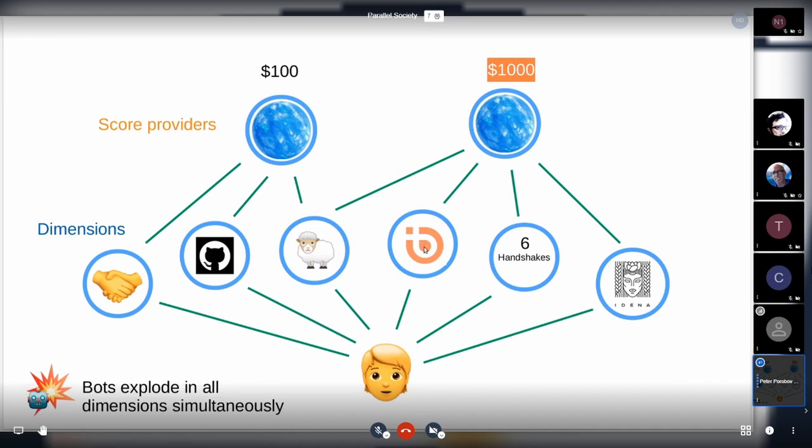If we have a set of dimensions that are highly trusted - like a user that belongs to some DAO, at the same time has some score in BrightID, in six handshakes (which is our another idea), and has a score in IDENA - a score provider may feel safe to assign a thousand dollars score to a user like this. This is how a score may be really high because it will probably cost more than $1,000 to enter all those groups again.